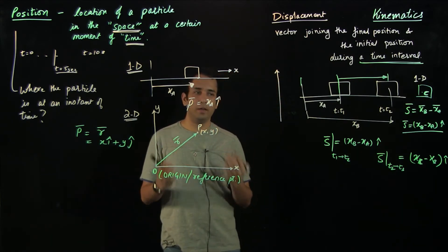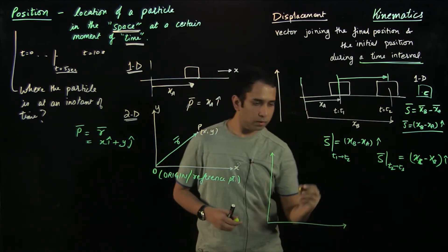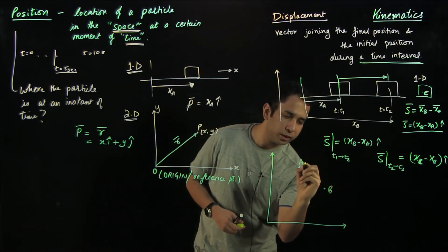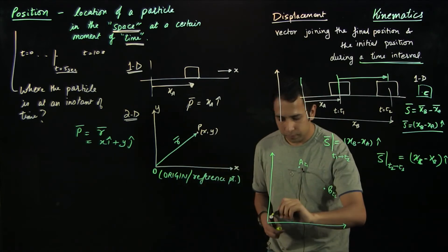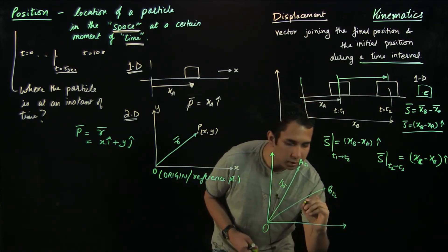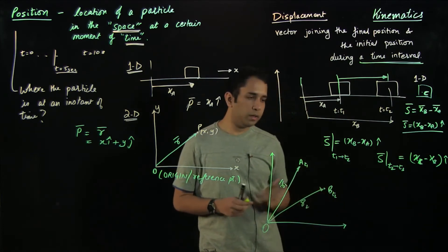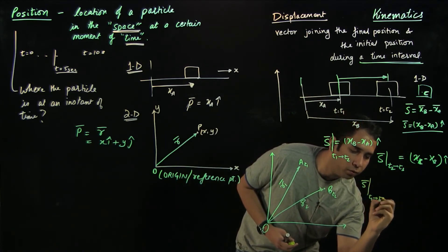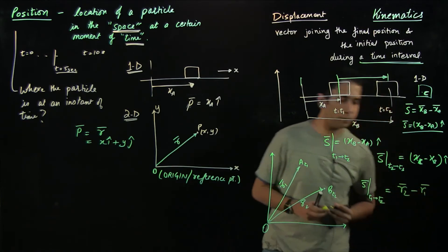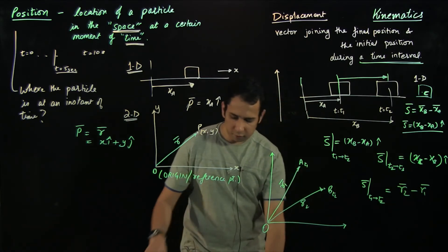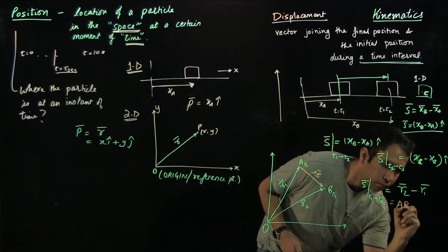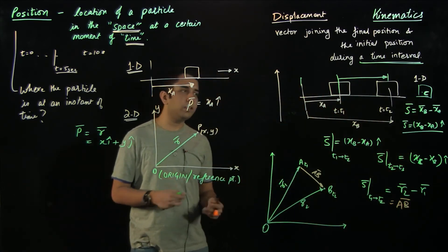Displacement can also be defined in a 2D plane. If the position at time t₁ is given by position vector r₁ and at time t₂ by r₂ — where both are measured from the origin — then the displacement from t₁ to t₂ is r₂ − r₁, which by the vector addition law equals the vector AB. This way, position and displacement can be clearly defined in both 1D and 2D motion.